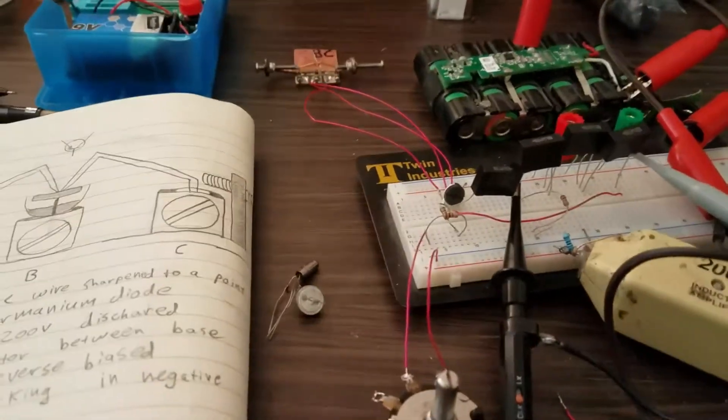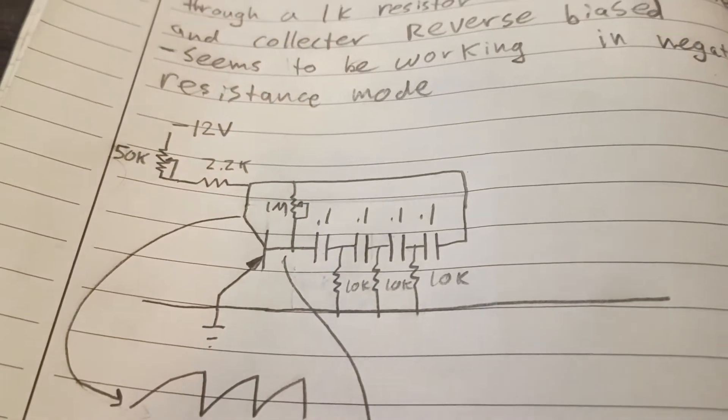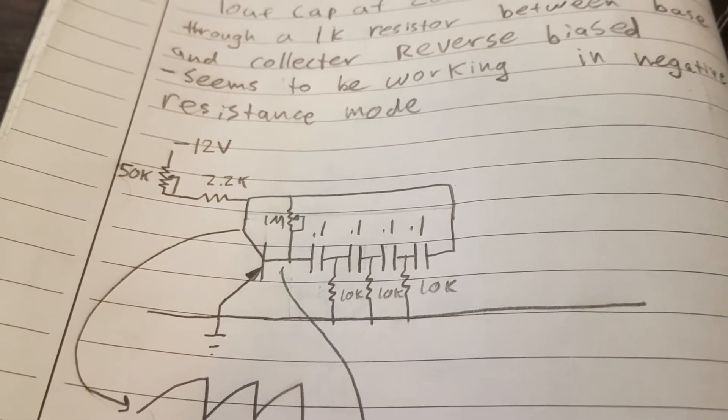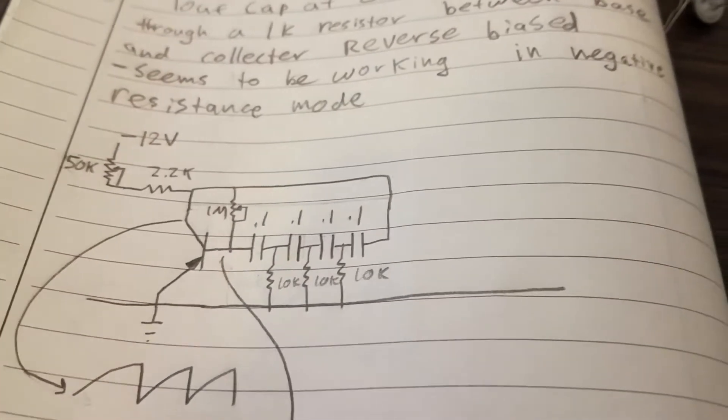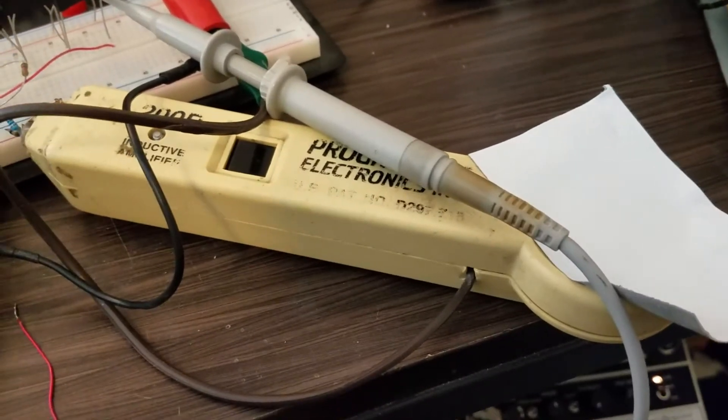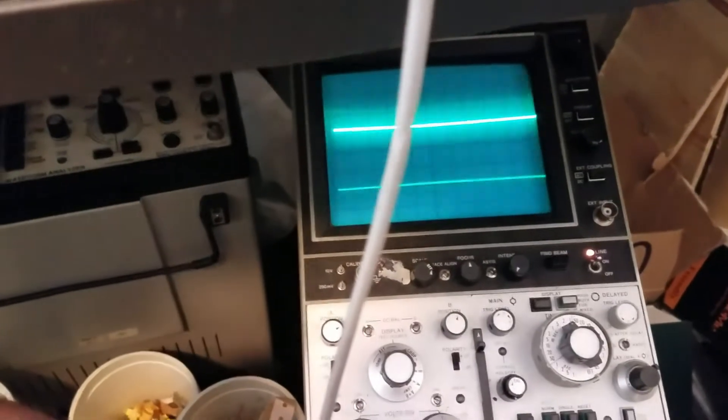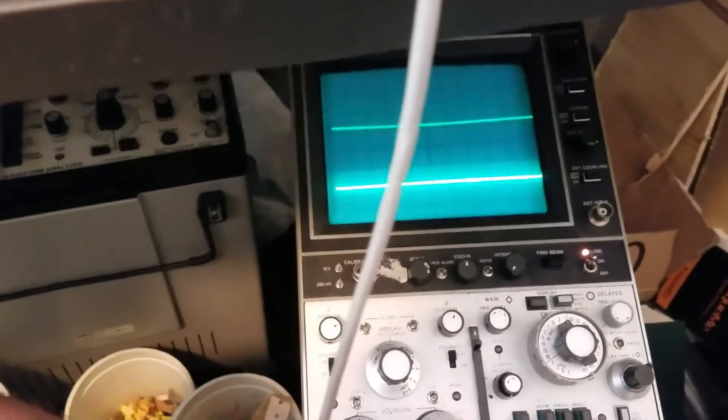So I have it hooked up in a phase shift oscillator, this circuit right here, and I'm going to adjust that 50k potentiometer until it starts to oscillate. I also have it hooked up to a little amplifier so we can hear it. And the top trace is on the collector and the bottom trace is on the base.